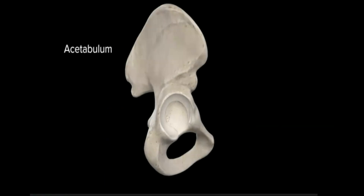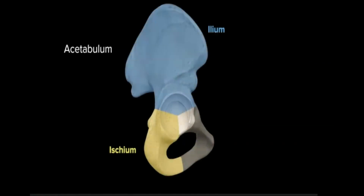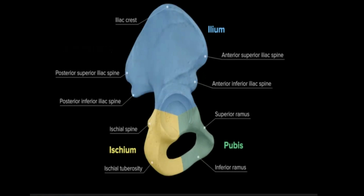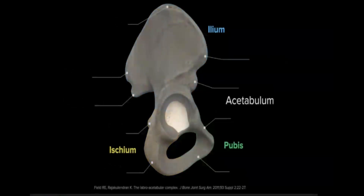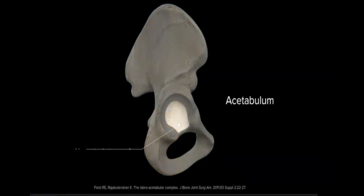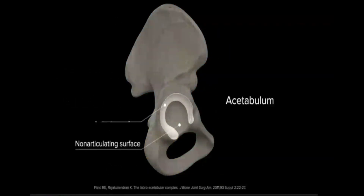The acetabulum is a concave surface formed by the three bones of the os coxae: the ischium, ilium, and pubis. The inferior and side boundaries of the acetabulum are provided by the ischium, the superior boundary by the ilium, and the remainder by the pubis. This cup-like socket consists of a central non-articulating surface and a lunate articular surface towards the periphery, with hyaline cartilage overlying the lunate articular surface.